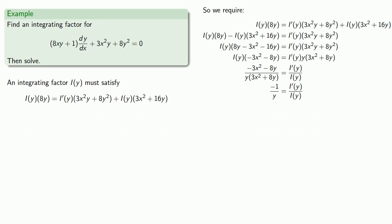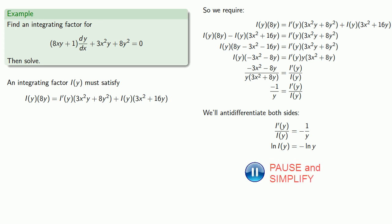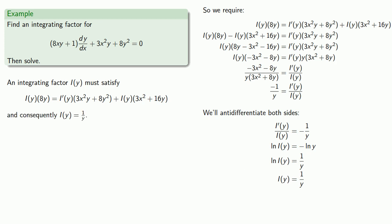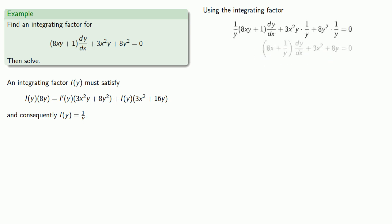Getting all of our i and i prime terms onto one side, we find that the quotient of our two functions of y — i of y and its derivative — is a function of y only. And this, at least, is a possibility. So we can anti-differentiate both sides, do a little algebra, and find that our integrating factor is 1 over y. Using this integrating factor gives us a new differential equation which is exact.